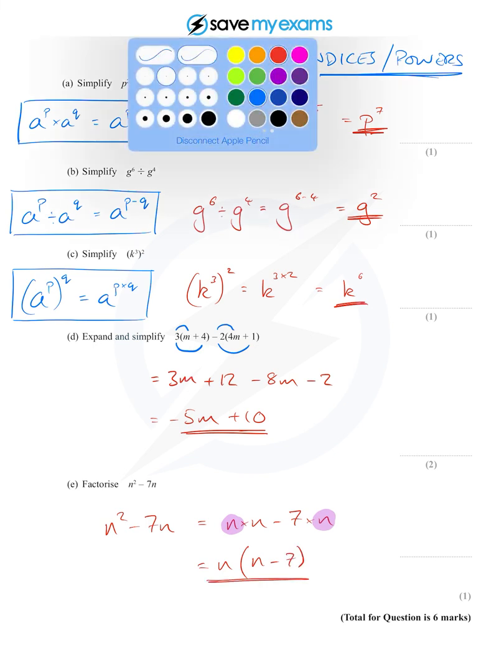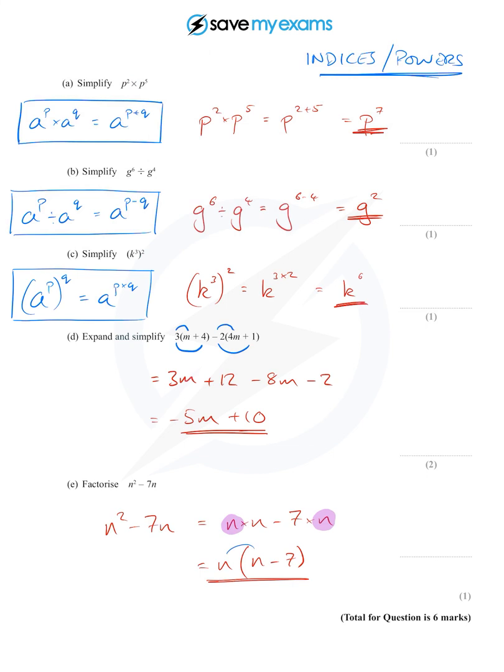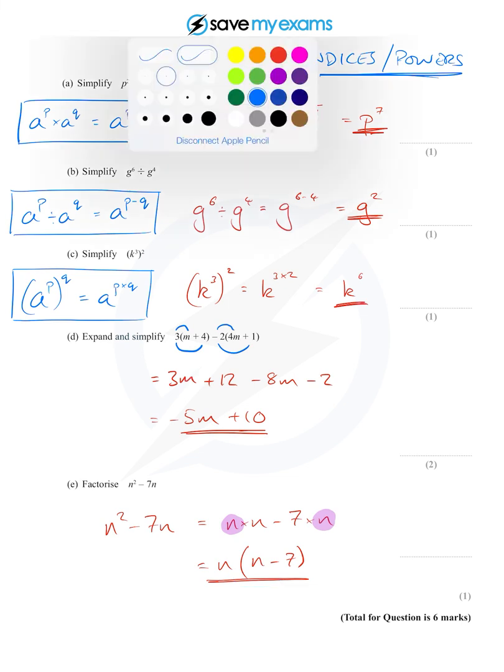And if you want to check that, you can of course multiply it out: n times n is n squared, and n times minus seven is minus seven n, so it does work. And lots of little bits of algebra later we're done.